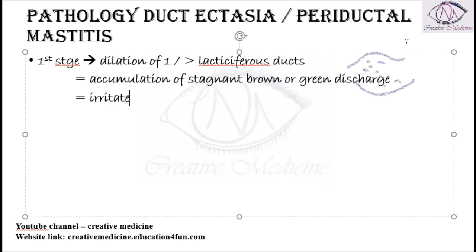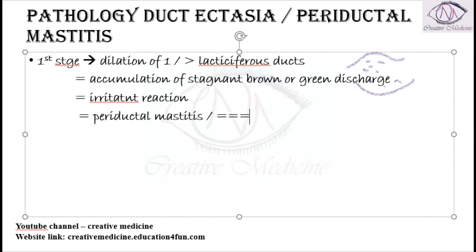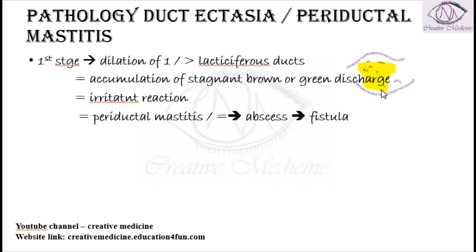This discharge causes an irritant reaction, which is responsible for the development of periductal mastitis. It can even progress to abscess development, and this mastitis may get infected, resulting in purulent discharge.